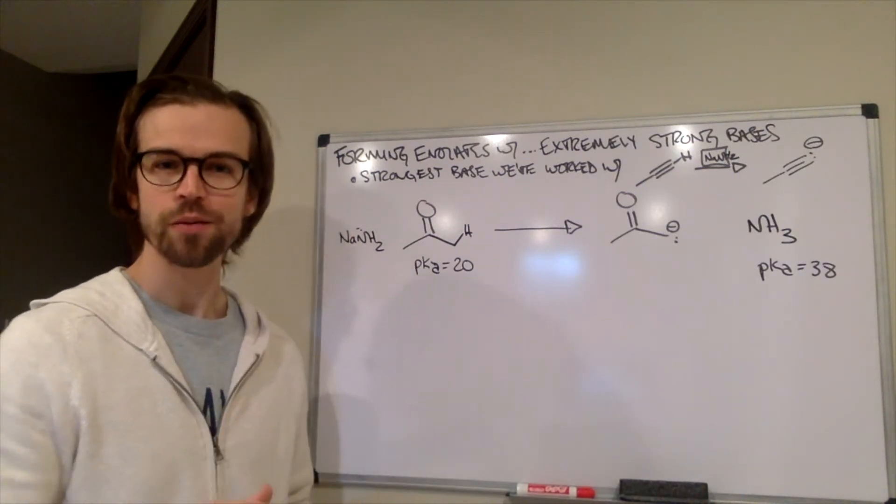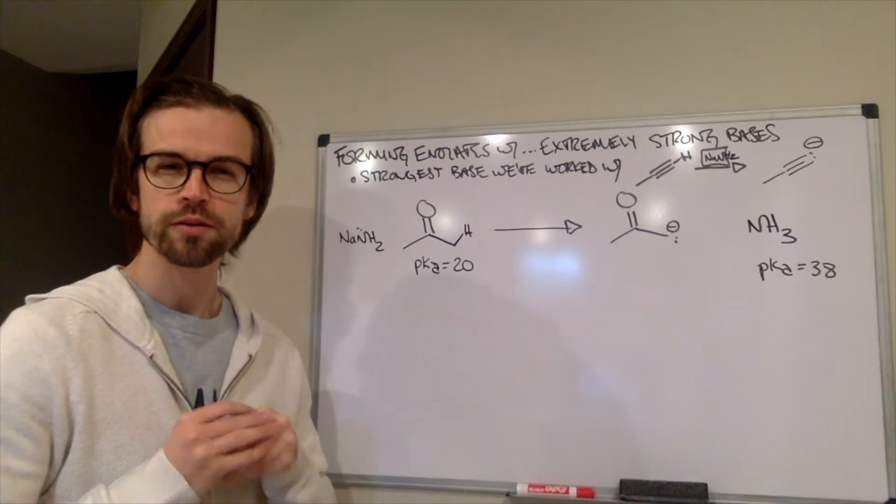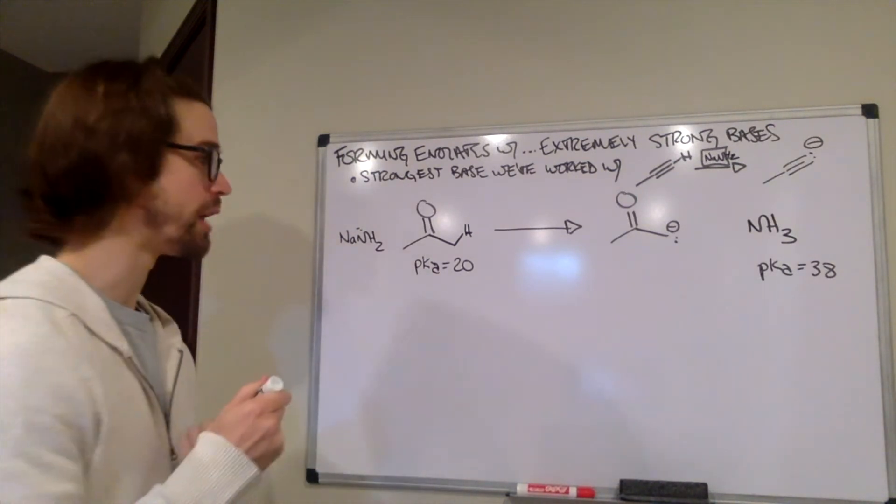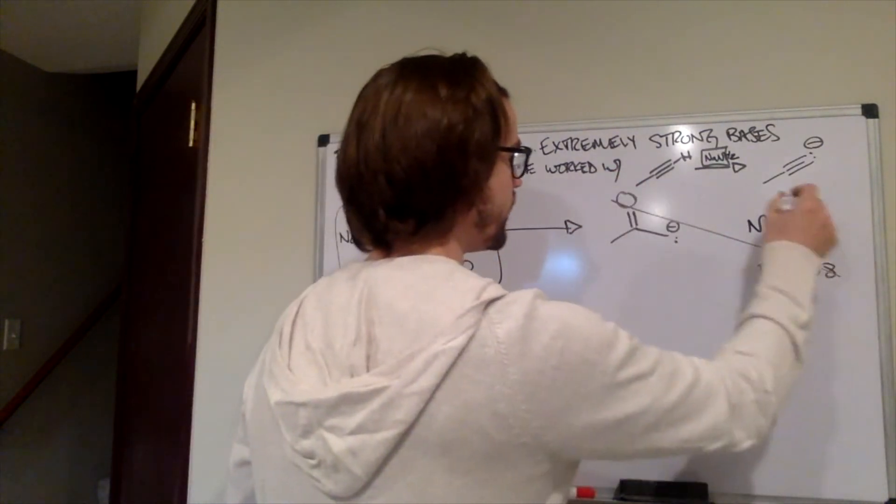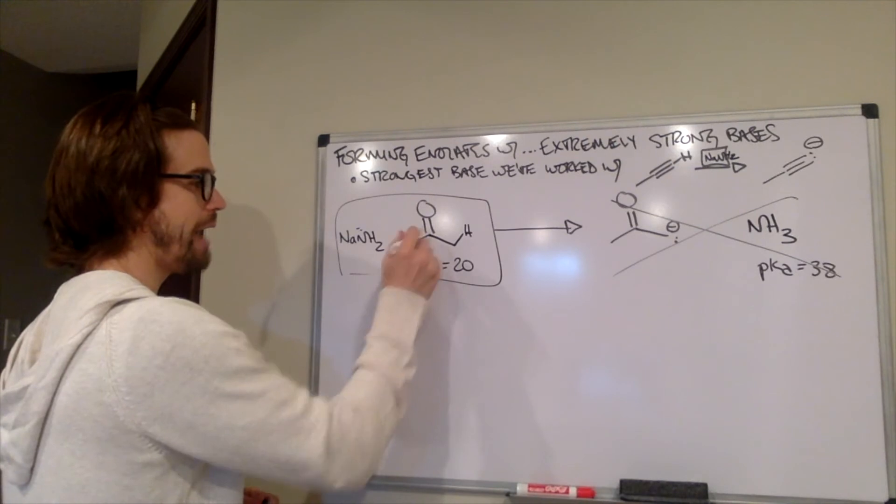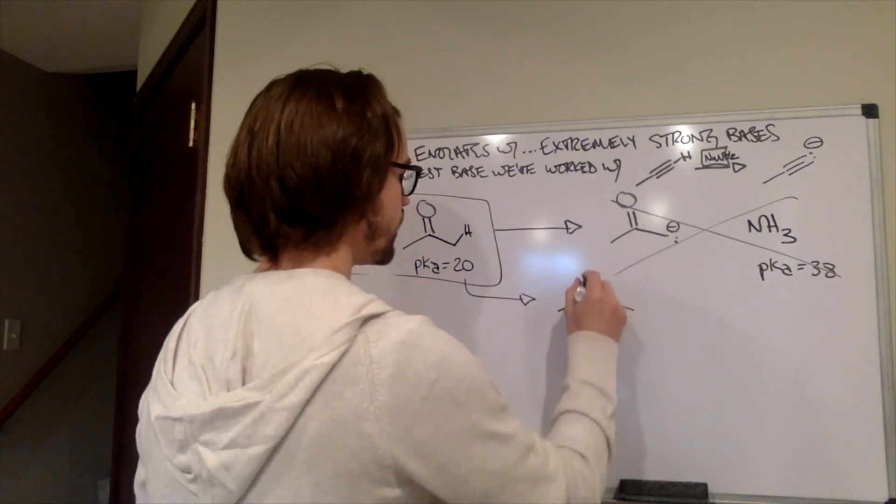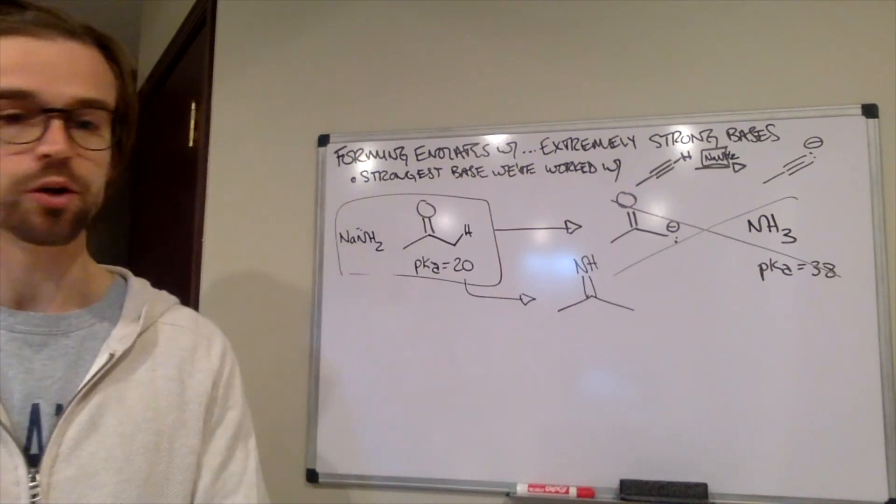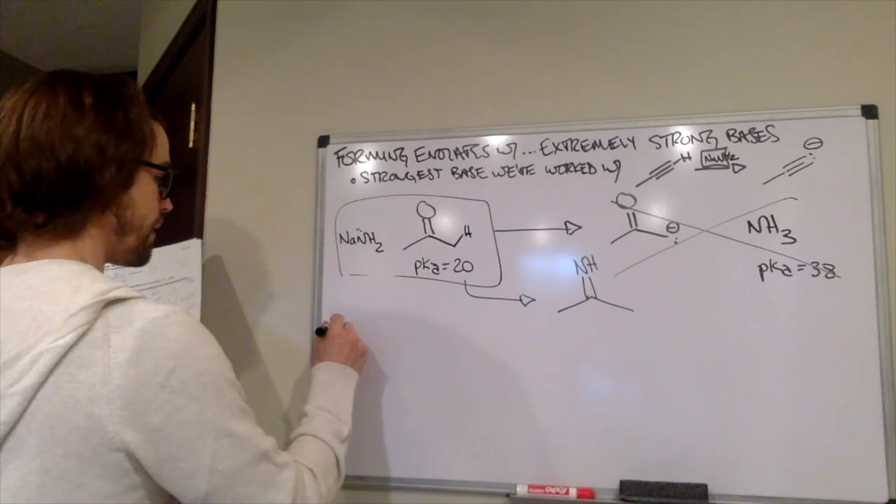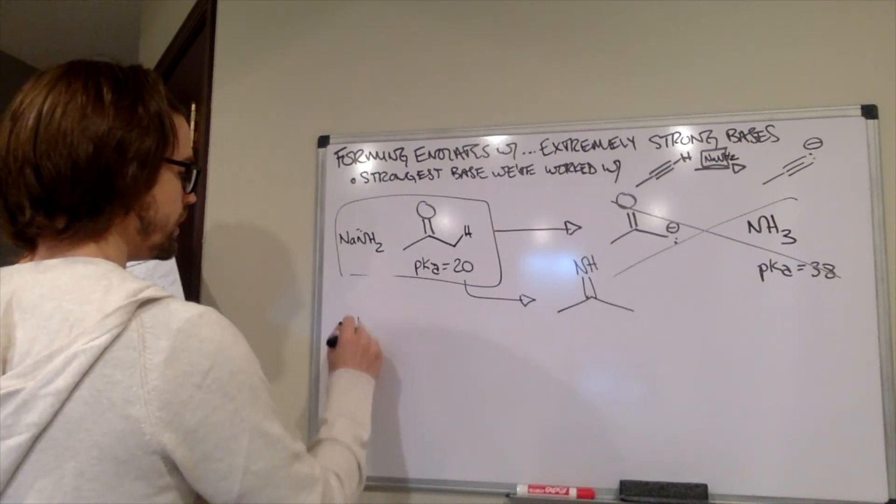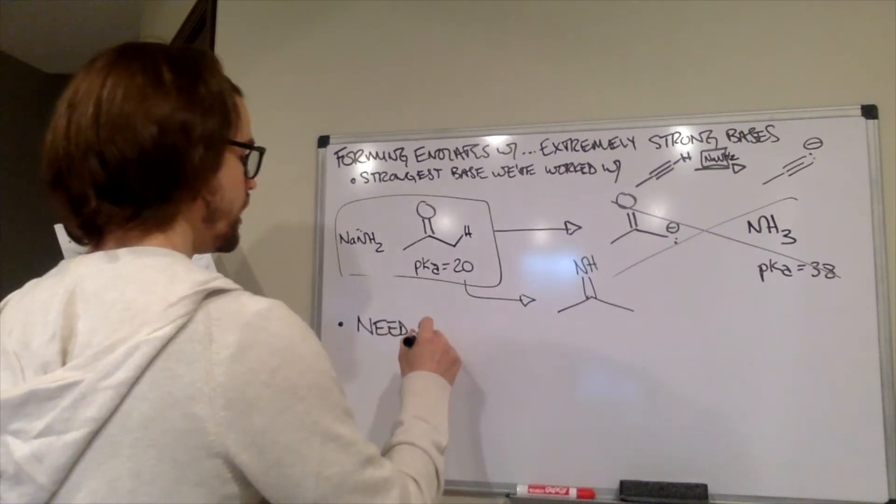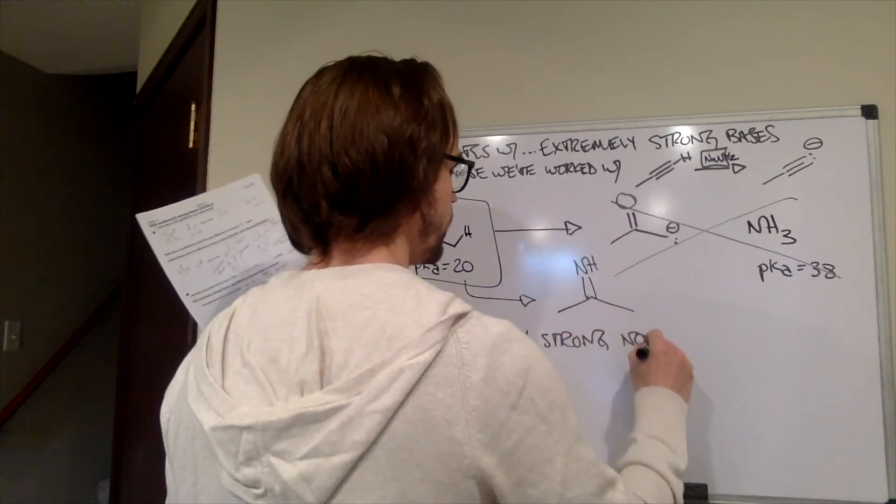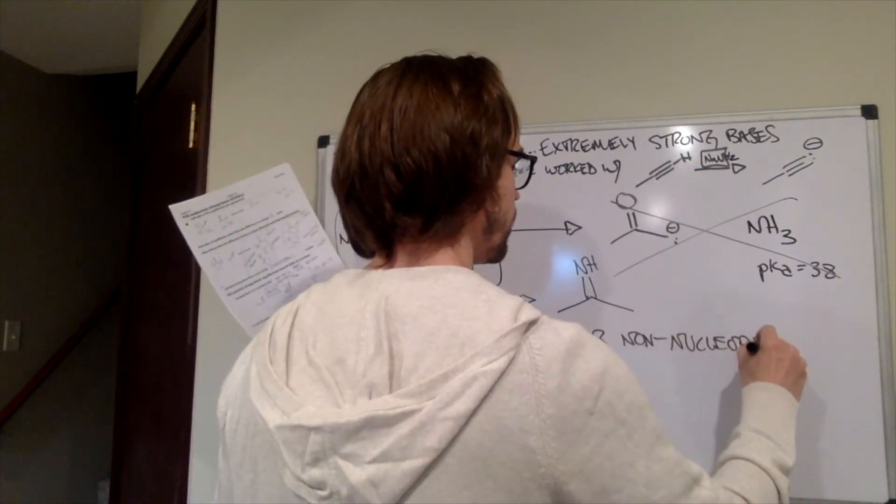However, turns out we actually can't use sodium NH2. Why do you think that might be? Yeah, it's the same reason why we can't use a Grignard or an organolithium. If we mix these two together, we're not going to form this. This NH2 is going to add to the carbonyl carbon. And instead, we would be forming the imine. So, that's not what we want to do here. So, we need a really strong base like this. And I have that on the bullet point below. We need a really strong base. But we need an extremely strong non-nucleophilic base.